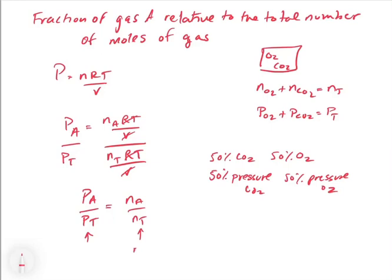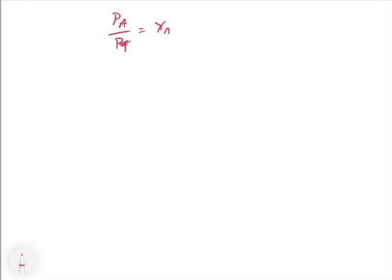We can summarize this as what we call a mole fraction. Mole fraction is written with the symbol chi (χ). So chi of A, or the mole fraction of A, is equal to the number of moles of A divided by the total number of moles. From this, we can derive that PA over P total equals the mole fraction of A. Therefore, the pressure of A equals the mole fraction of A times the total pressure.